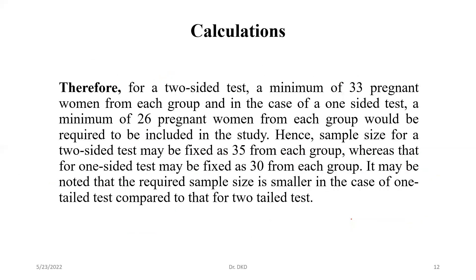For a two-sided test, a minimum of 33 pregnant women from each group is required. For a one-sided test, a minimum of 26 pregnant women from each group would be required. Hence, the sample size for a two-sided test may be fixed as 35 from each group, and for a one-sided test as 33 (rounded figure) from each group. It may be noted that the required sample size is smaller in the case of a one-tailed test compared to a two-tailed test. Thank you.